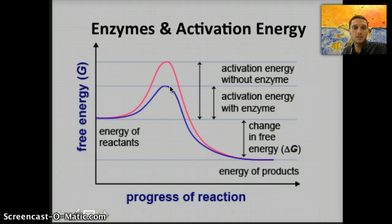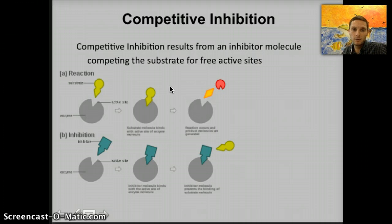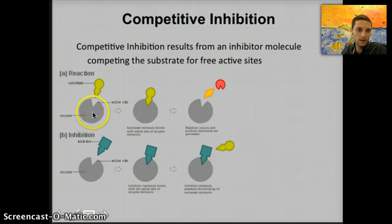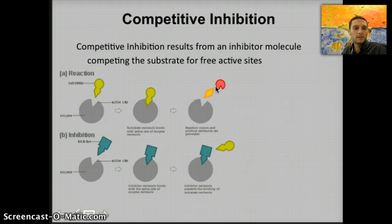Enzymes reduce the activation energy necessary, helping to speed up reactions. However, different things can inhibit, block, hinder, or slow down the rates of reaction. One of those mechanisms is called competitive inhibition. In this case, something is competing for that enzyme. Here's our normal reaction: the gray Pac-Man-like circle is the enzyme, here's our substrate, here's the active site where the substrate binds, and then the product is produced. In competitive inhibition, some other molecule is competing for that active site so the enzyme is not able to bind with the substrate.